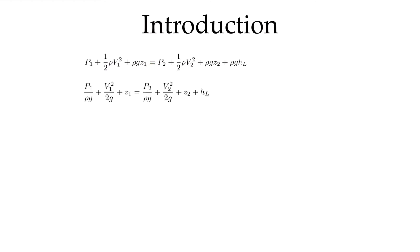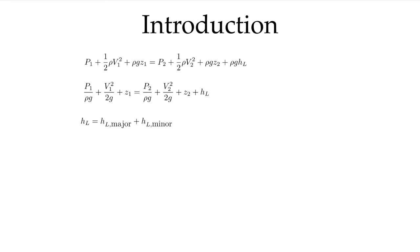We can divide that by rho g and write this in terms of units of meters, writing it in terms of the heads: the pressure head, the head due to kinetic energy, the potential energy head, and the head due to the losses. Those losses are made up of the major losses — which we are talking about in this section, the losses due to friction in the pipe — and the minor losses, which are due to the fittings in the piping systems, covered in the next video.